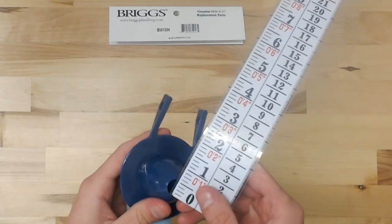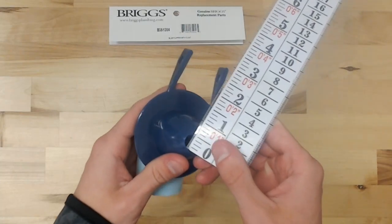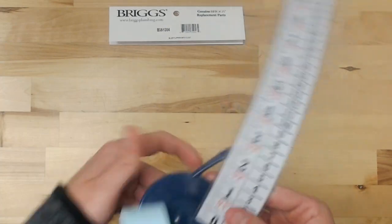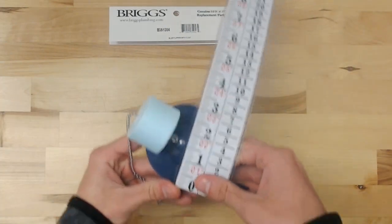We'll do the inside diameter of the hole there. It's about half an inch. Across the top, right at three inches.